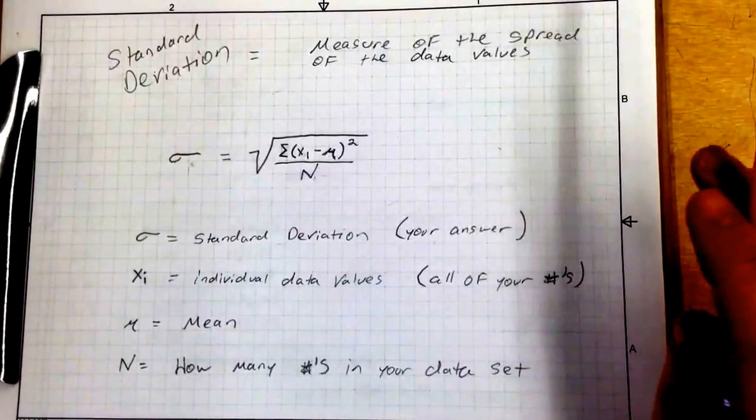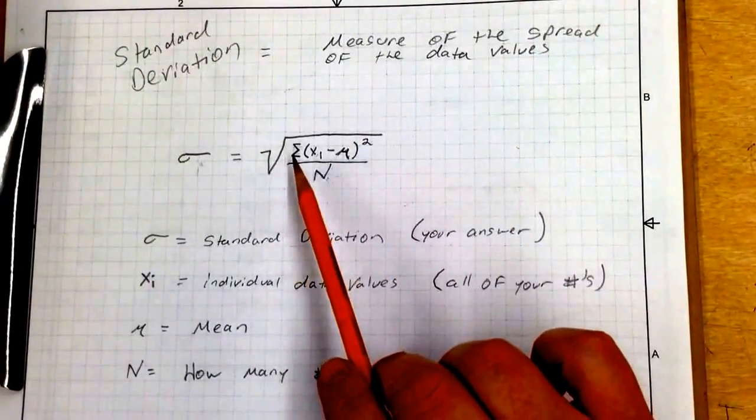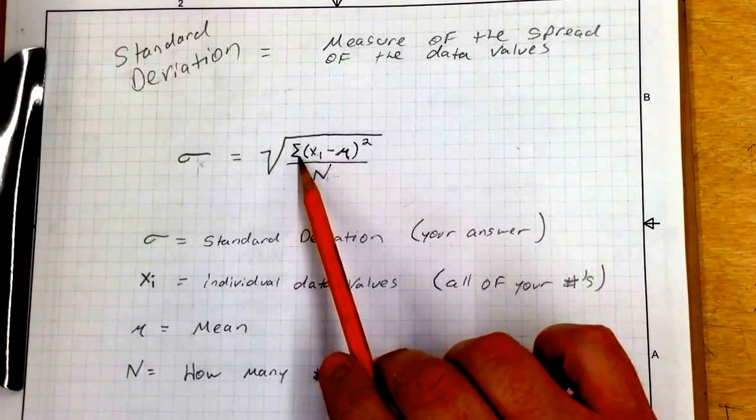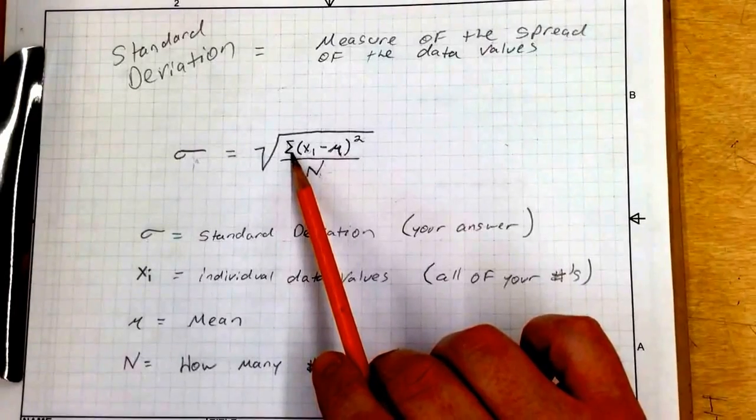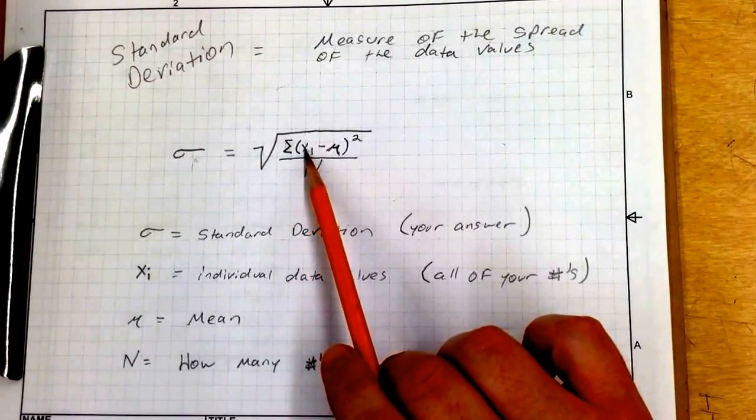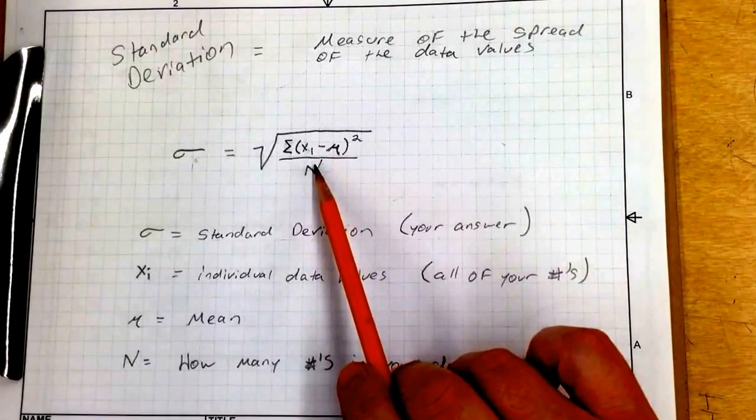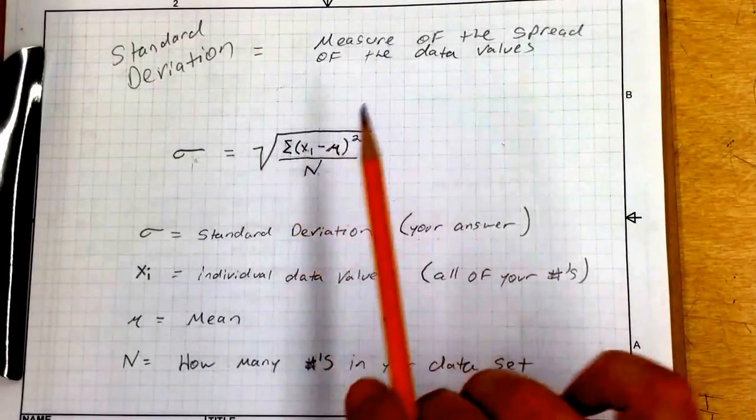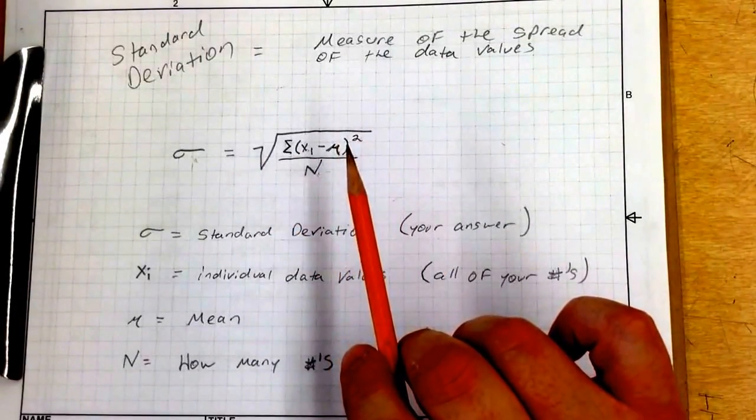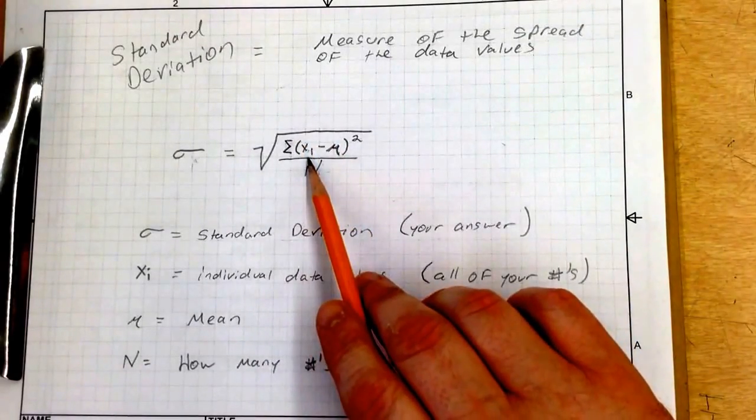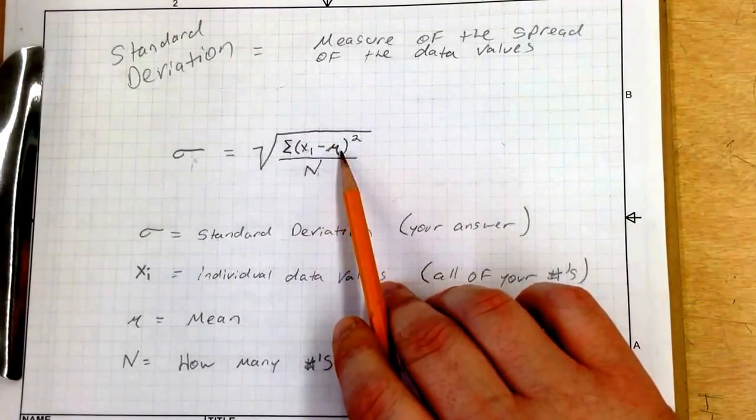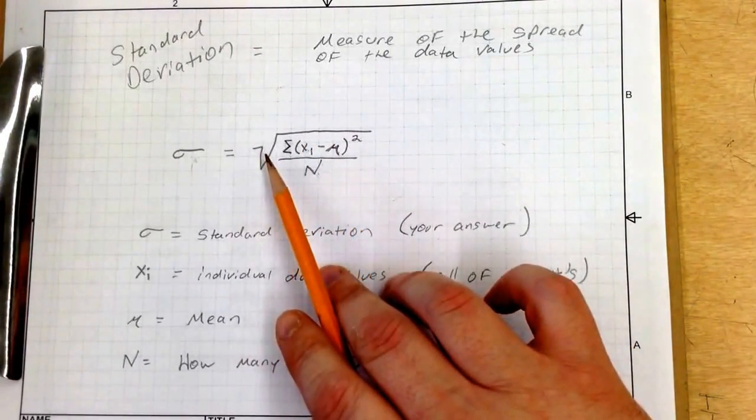So let's try to figure out what this means. You need to take your numbers, subtract the mean, square it, divide by n, and square root.